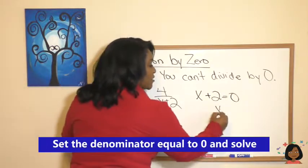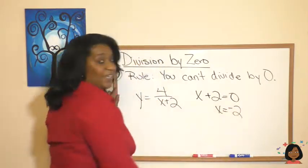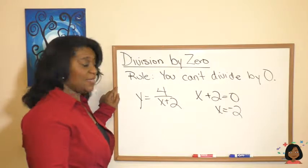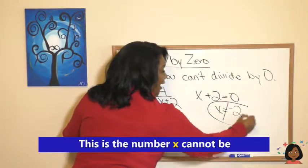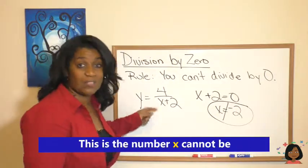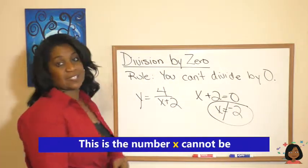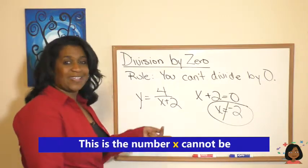If we set x plus two equal to zero and we solve for x, we would get x is negative two. So that means for this, x cannot equal negative two.